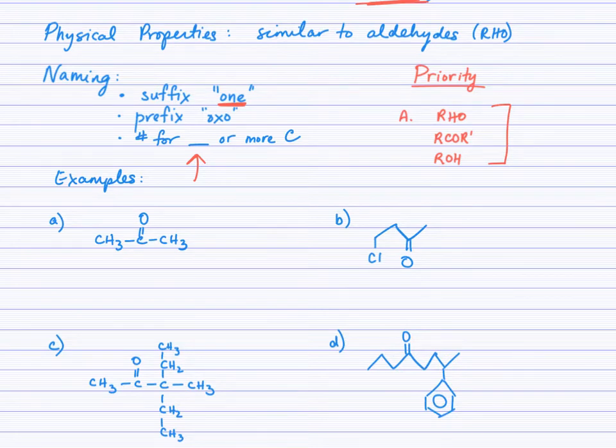So here we have a three carbon ketone, one two three, that puts the carbonyl group on carbon two. Now do we have to say propan-2-one or is it enough to just say propanone?